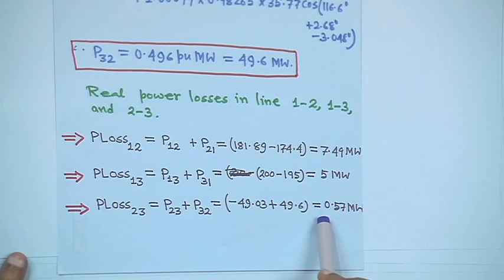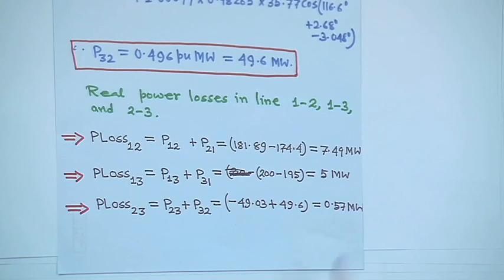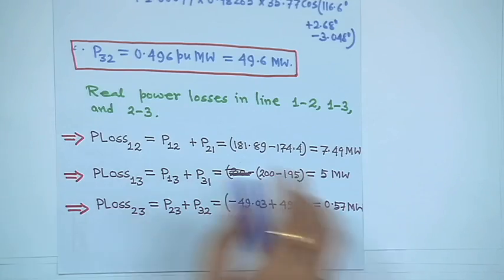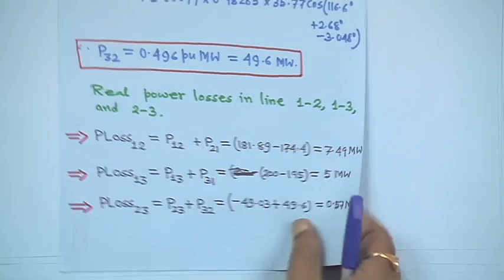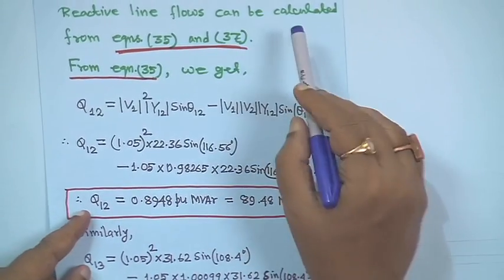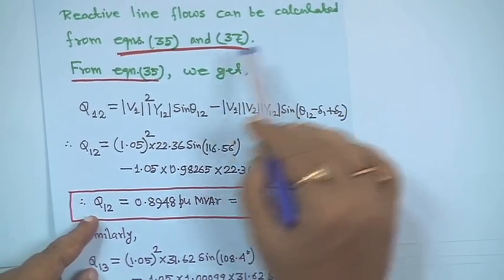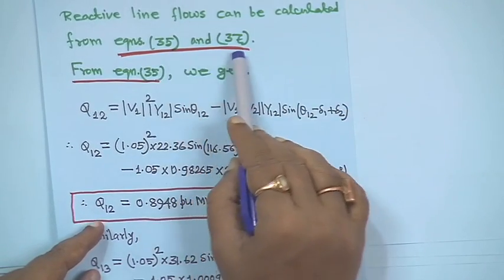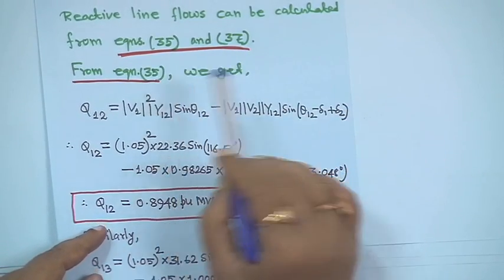These are the results for the losses after the second iteration — that is the real power loss. Similarly, reactive line flows are calculated from equations 35 and 37.